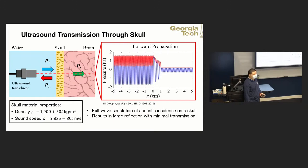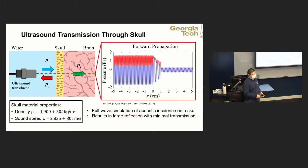Why is the skull such a barrier? The skull is a good reflector of sound because it's too stiff and its density is much higher. In terms of acoustic impedance, it's much higher than soft tissue. So there's an impedance mismatch that results in this strong reflection.